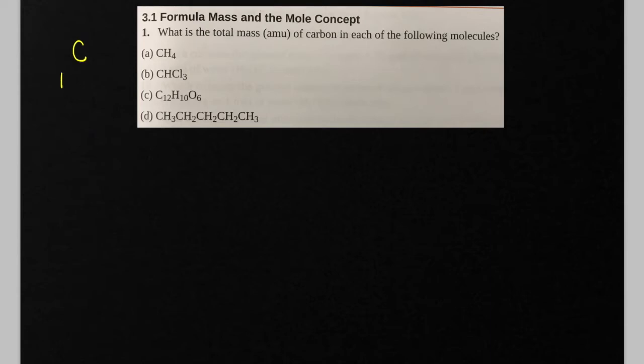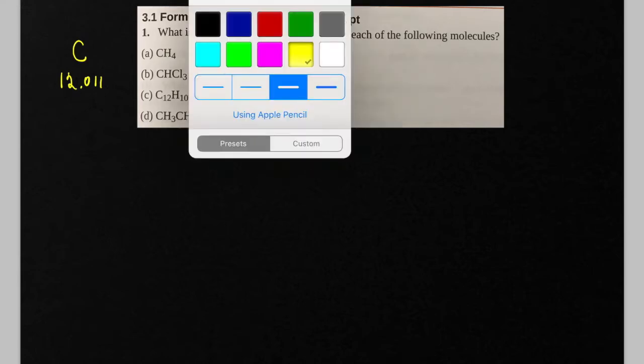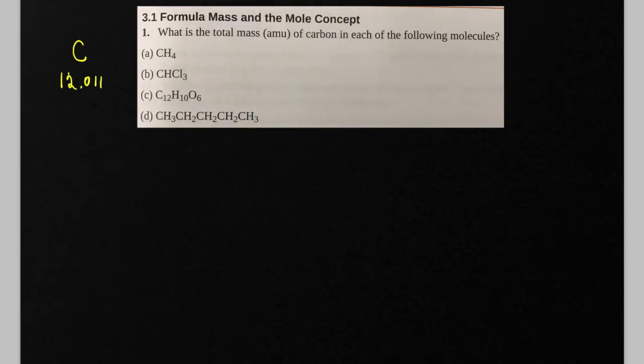Now carbon, if you look at the periodic table, below it has an average atomic mass of 12.011. So you need to count up the total number of carbon atoms in your molecules and then calculate this.